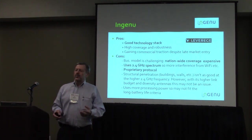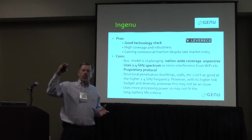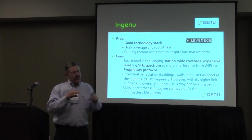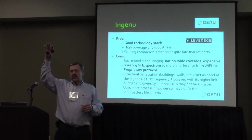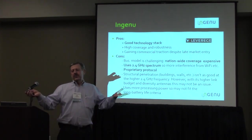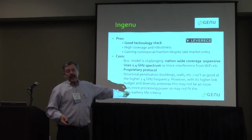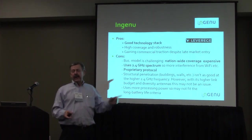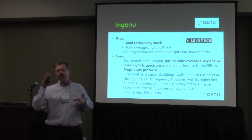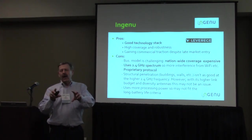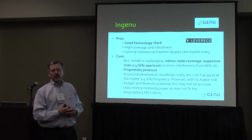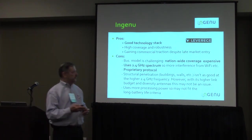Interestingly, while everyone else uses sub-gigahertz spectrum, Ingenu uses the 2.4 GHz range — the Wi-Fi frequencies. Everyone assumes that means short distance, but this technology can go several miles easily and gets good deep building penetration, because of all the adaptive and robust technology they use to allow the signal to be decoded at the other end.